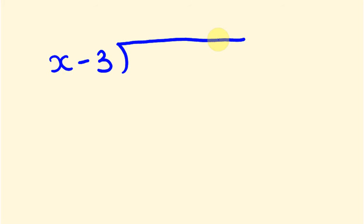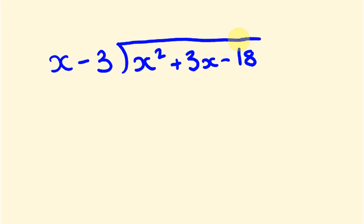First off, I'm going to write down the type of polynomial we'll be looking at. So say we had the example from the last video: x take away 3, being divided into x squared plus 3x take away 18. The way we directly divide is really simple. We start the same way — x squared divided by x is x — and you're going to see this stays fairly clean with nothing written below.